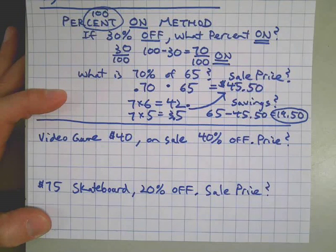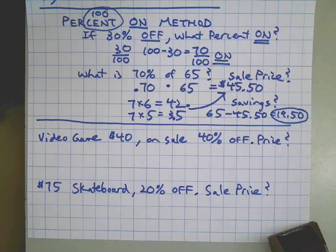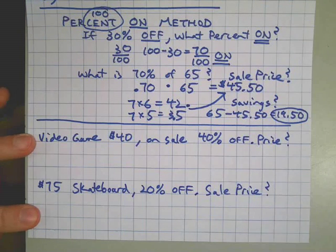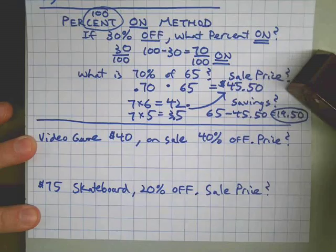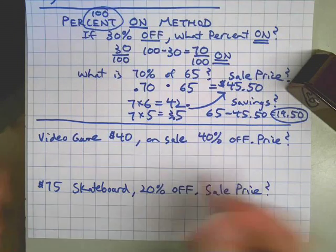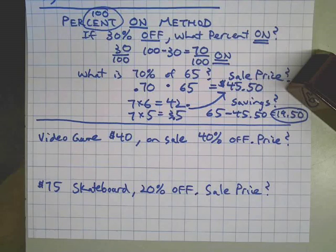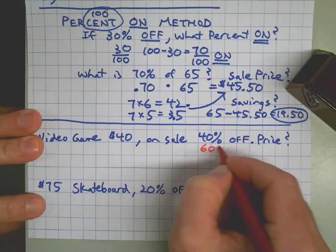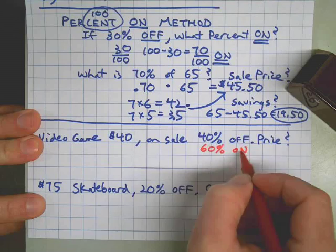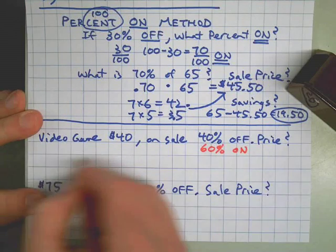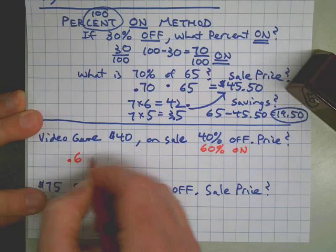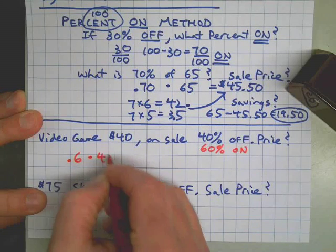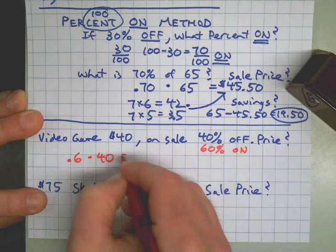All right, welcome back. Using the percent on method shown above, here we go: forty percent off means sixty percent on. These two, off and on, should add up to one hundred percent. So my question is simply: what is sixty percent of forty dollars? And the answer is twenty-four dollars. Simple as that.